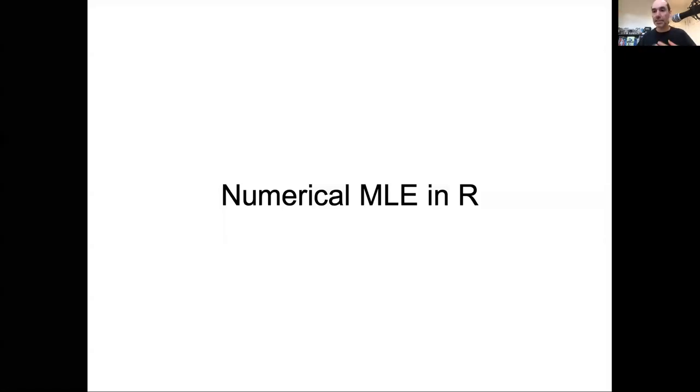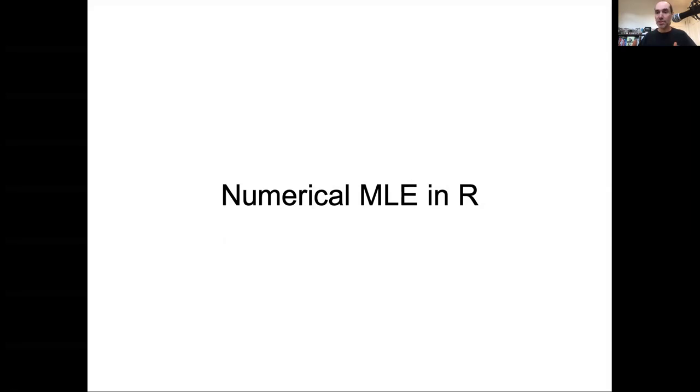Welcome back. In the last couple videos, we introduced the problem of finding minima and maxima of likelihoods using numerical methods. We went through the nuts and bolts of how the algorithms for numerical optimization work. Now I want to get into the weeds and say, how do we apply those algorithms in R to actually do numerical maximum likelihood? I'm going to start with a simple example that we've seen before and actually know the analytical solution to.